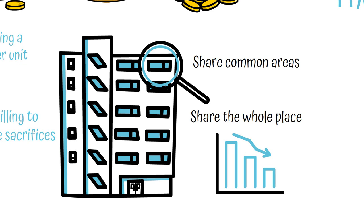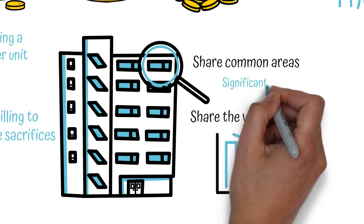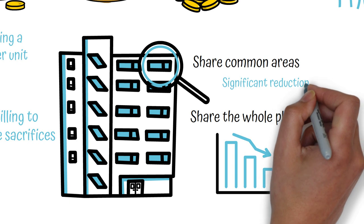Sharing not only the common areas with other people but the whole place instead is another good option. By splitting the cost of rent and utilities among multiple people, you can significantly reduce the amount of money you need to pay each month.